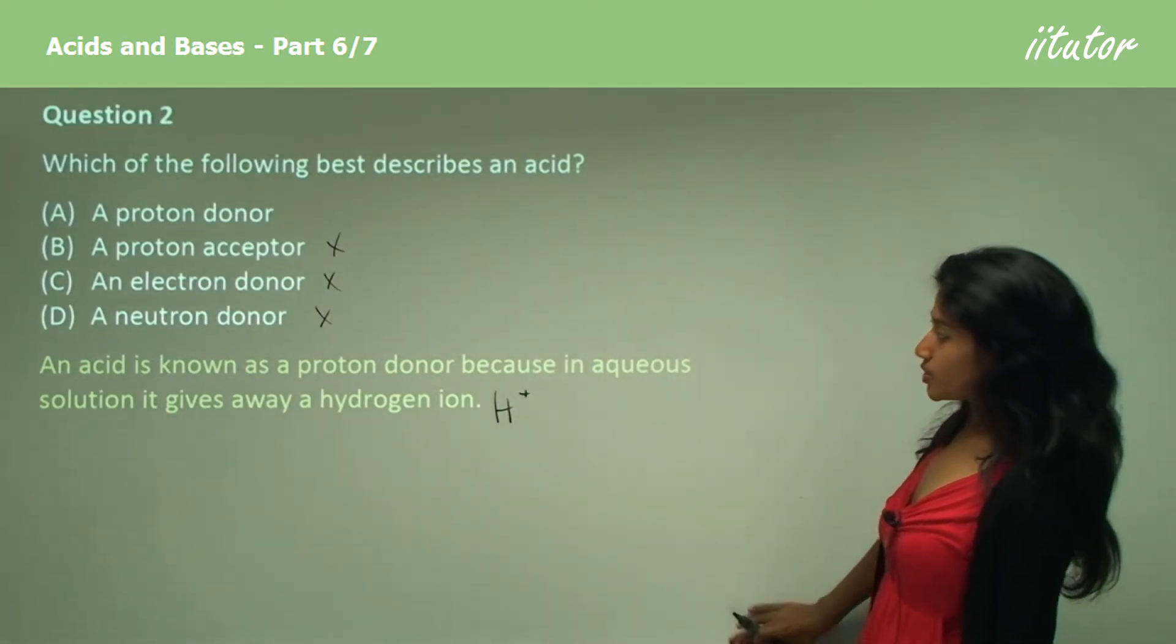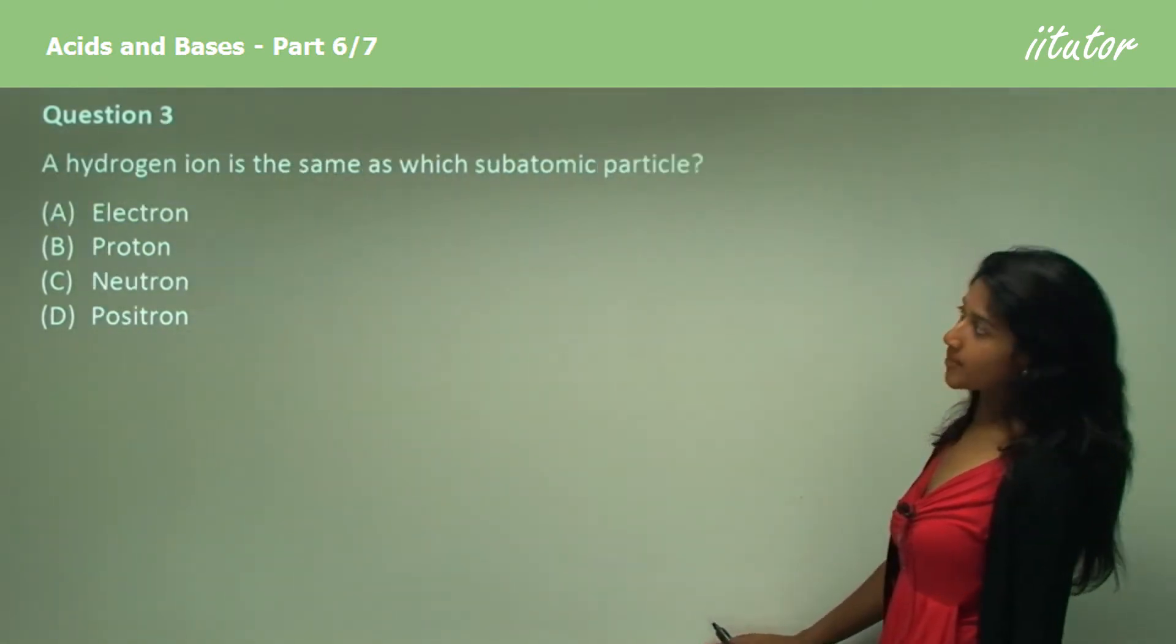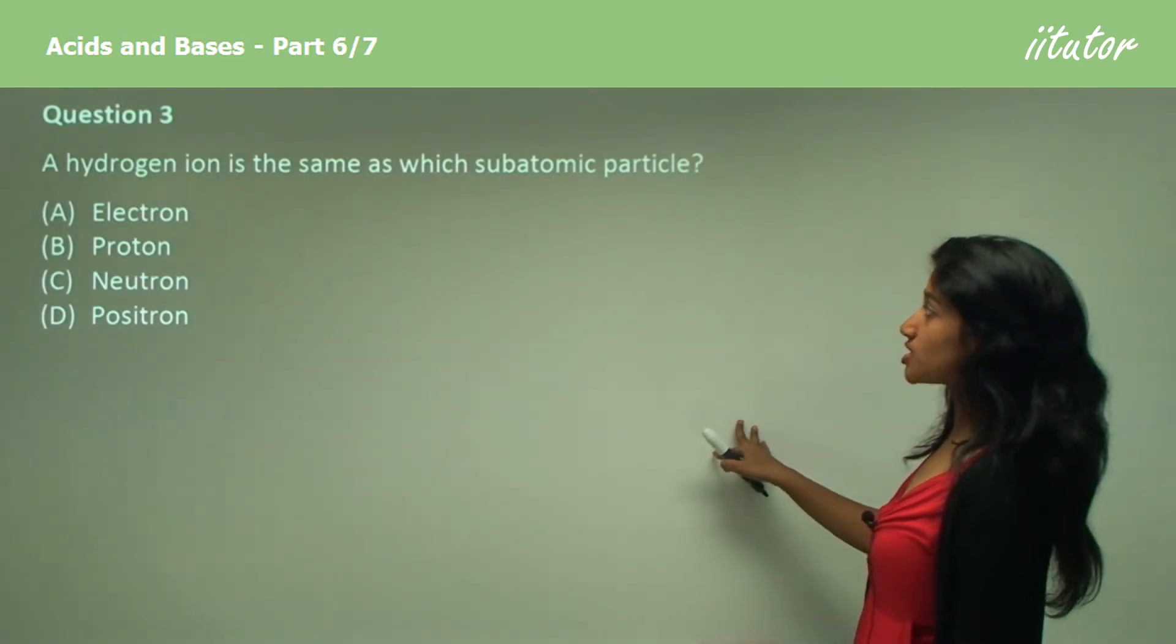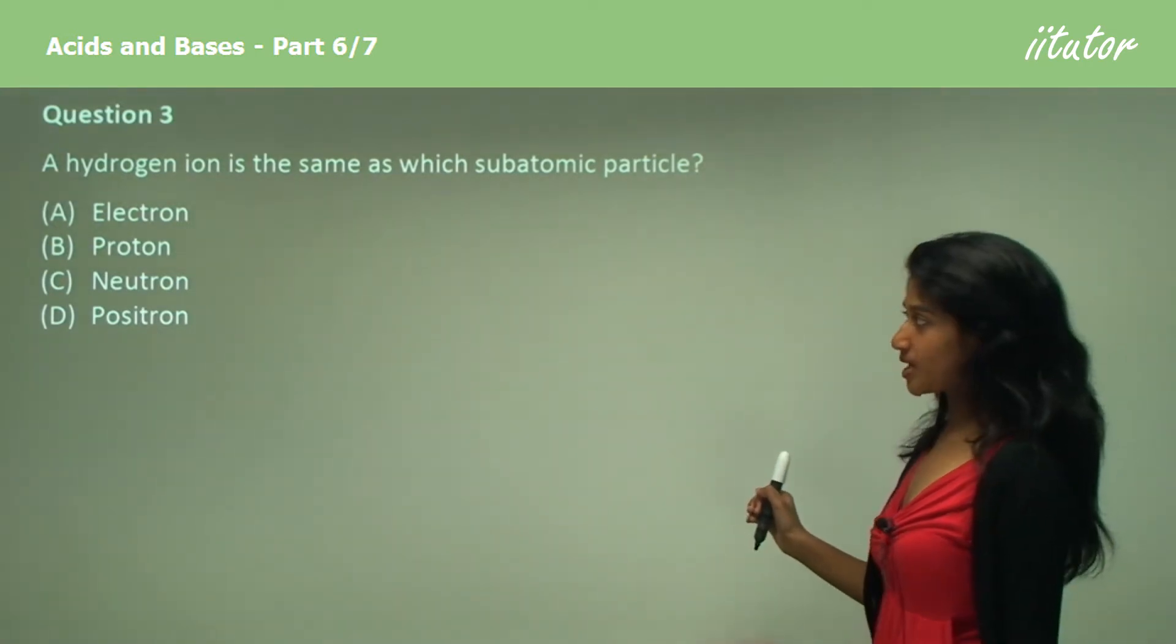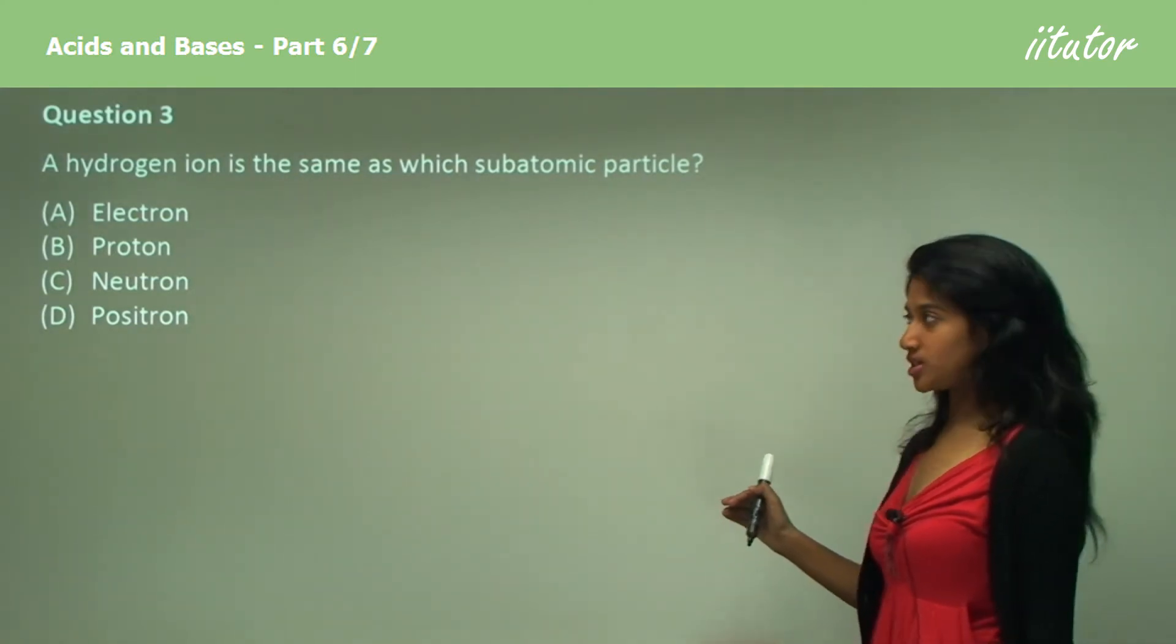Let's move on to question three now. Question three, a hydrogen ion is the same as which subatomic particle? Is it A, electron? B, proton? C, neutron? Or D, positron?